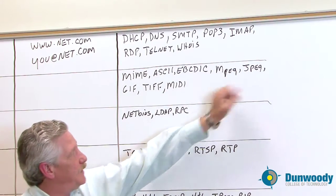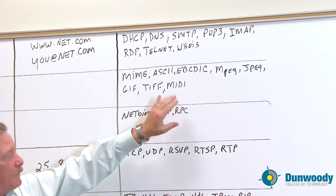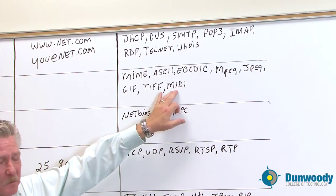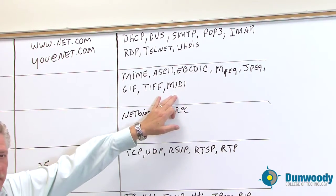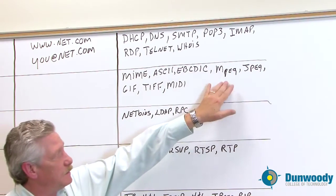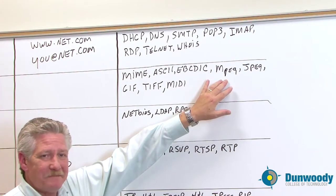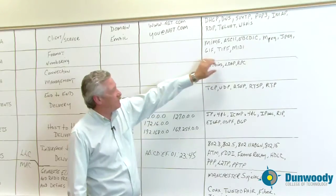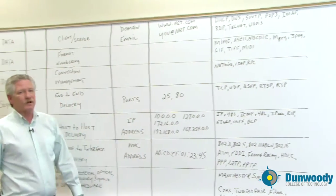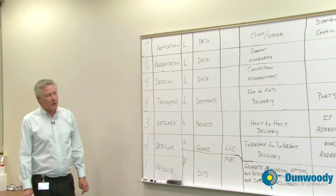Other presentation layer formats include MPEG, JPEG, GIF, TIFF, and MIDI. Some musician friends use MIDI for recording. If you're using MPEG, such as MPEG-4, you're watching QuickTime. JPEGs, GIFs, and TIFFs are image formats — small pictures. You can also add bitmap and a whole bunch more to that list.